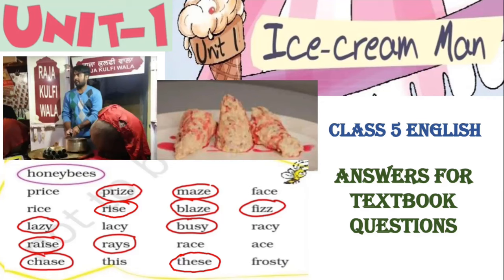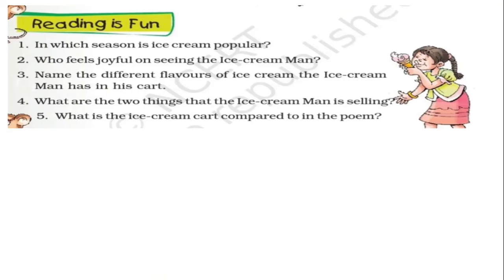Hello and welcome to Mint Talk India. Today in this video we are going to see the answers for textbook questions for Class 5 English, Unit 1, Poem: Ice Cream Man. First in your textbook are the questions.